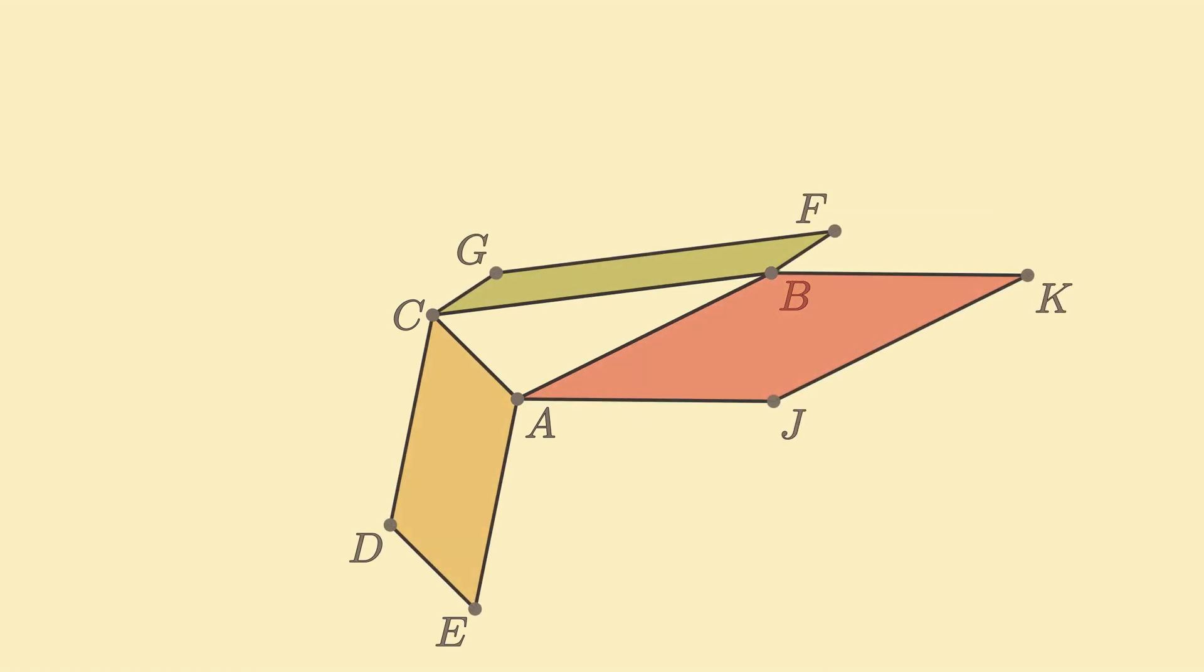We can use this idea to construct a more general form of the Pythagorean theorem, developed by ancient Greek mathematician Pappus of Alexandria. If we start with an arbitrary triangle with any arbitrary parallelograms on two sides, we can construct a third parallelogram on the remaining side, whose area is equal to the sum of the areas of the two existing parallelograms. The construction follows the exact same pattern as in the proof of the Pythagorean theorem.